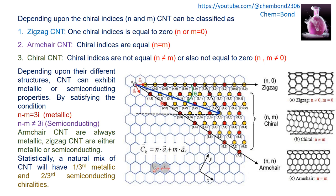For a zigzag carbon nanotube, graphene is cut and rolled along the a1 vector. In this case, a1 is repeated — for example 10 times — and a2 is not repeated, giving the notation (10,0). Under this orientation system, zigzag carbon nanotubes always have m equal to zero and n having some non-zero value.